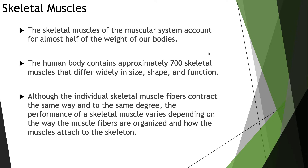We'll start off with skeletal muscles, which we've highlighted extensively in the previous modules. The skeletal muscles of the muscular system account for almost half of the weight of our bodies. The human body contains approximately 700 skeletal muscles that differ widely in size, shape, and function. Although individual skeletal muscle fibers contract the same way, the performance of skeletal muscle varies depending on how the muscle fibers are organized and how the muscles attach to the skeleton.